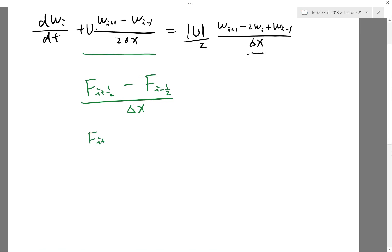You can see that fᵢ₊₁/₂ is equal to half of u times wᵢ₊₁ plus u times wᵢ—the central averaging flux scheme that we know that didn't work.